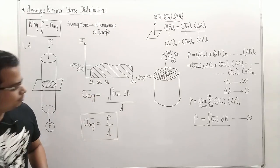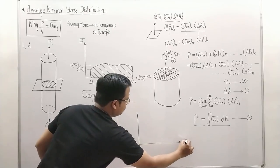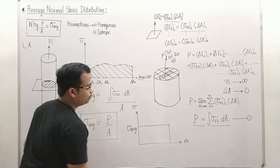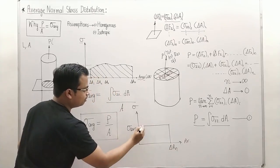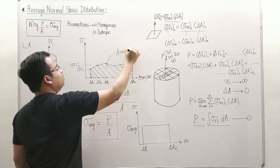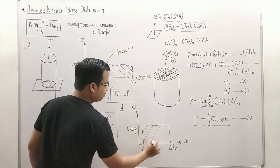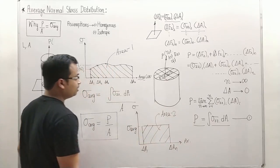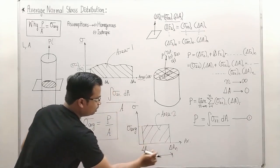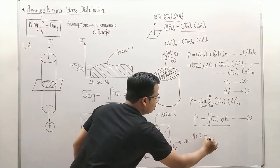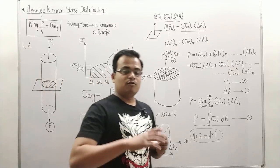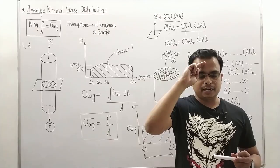What we have basically done is converted all these different values of sigma into one single value — the average value. Graphically, sigma_average is such that when you multiply sigma_average by the total area, you get the same result as the integral. That was all for today. I will see you again in the next video — until then, take care, have a nice day, keep learning and keep watching. Thanks.